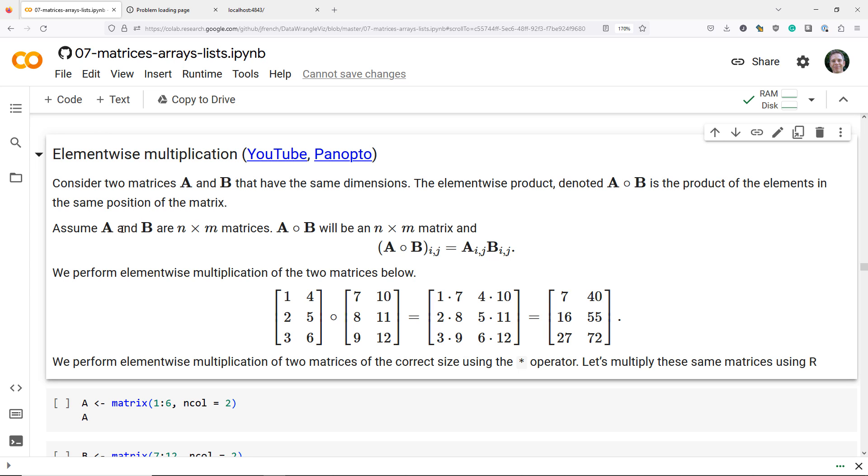So let's assume that we have two matrices, A and B, that have dimensions n by m. The dimensions of the element-wise product of A times B is going to be an n by m matrix.